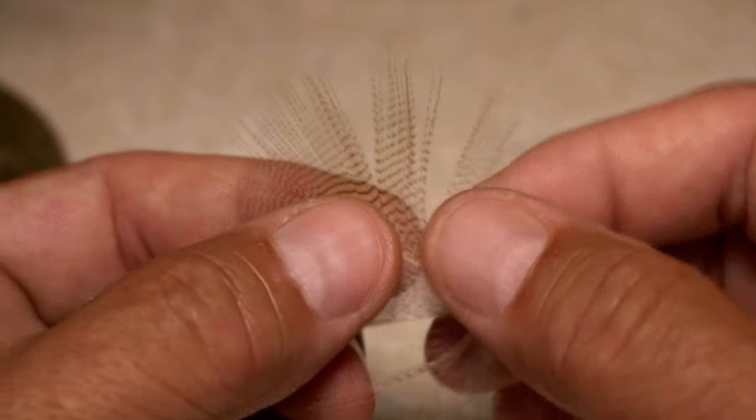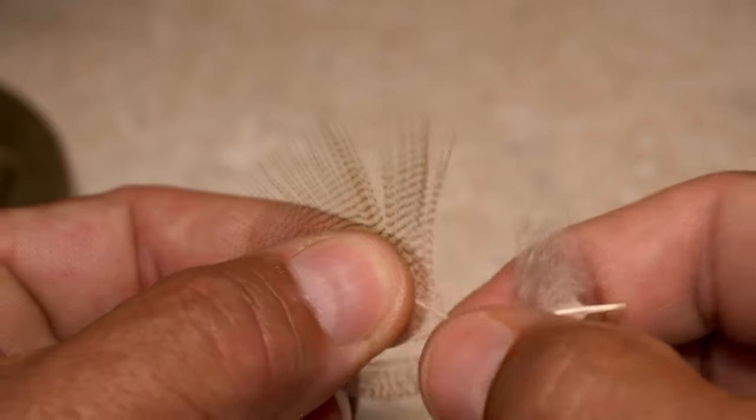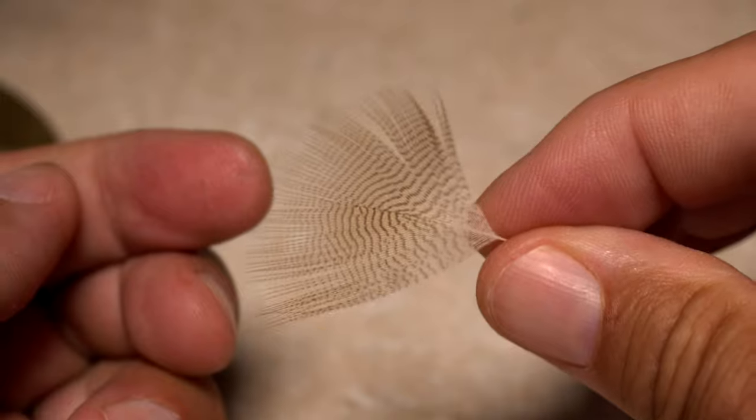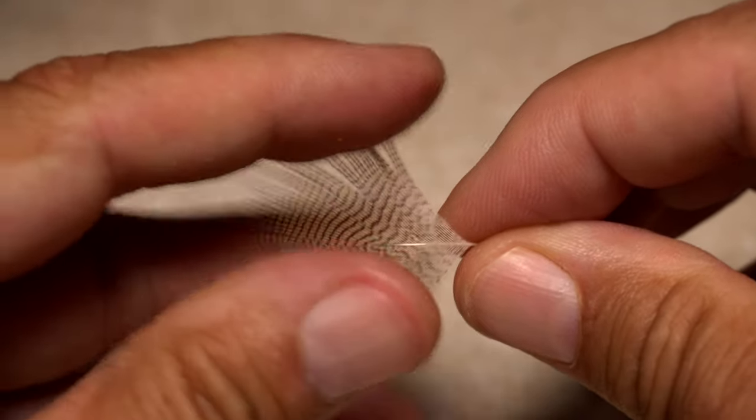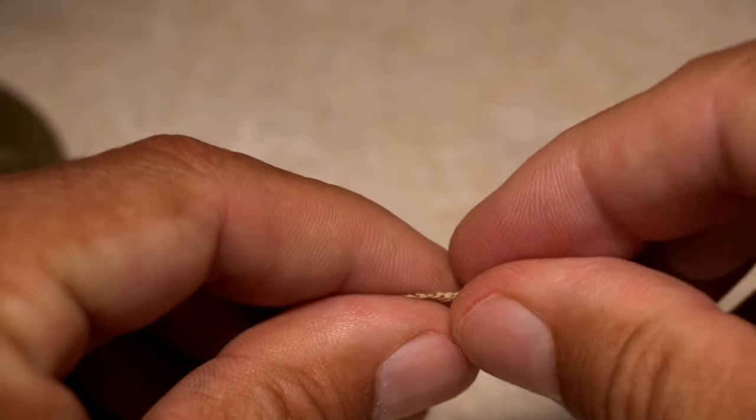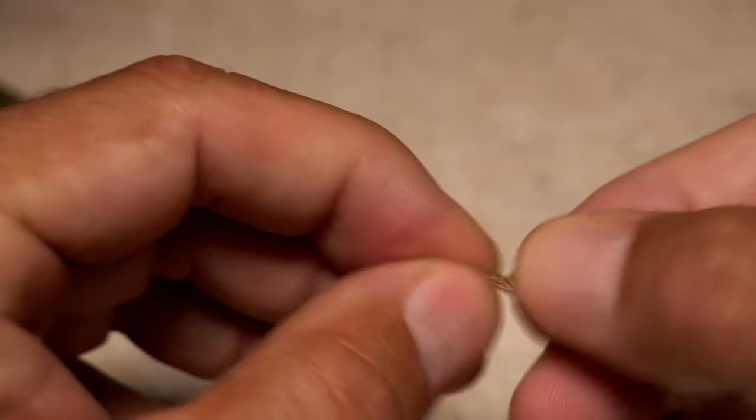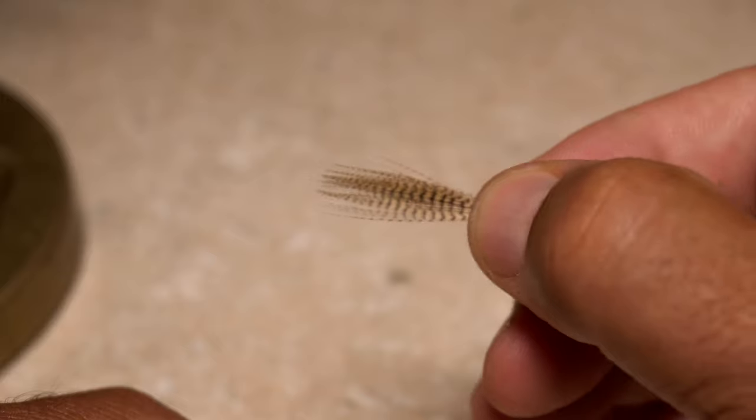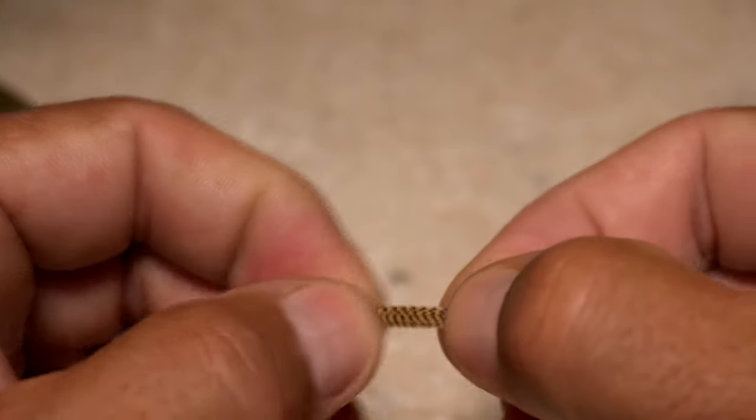A single wood duck flank feather is used to create the wing or back of the fly. Strip the lower fuzzy fibers free from the stem and then do your best to fold the feather around the stem. Ideally, all the tips should still be aligned. If the clump curves one way or the other, orient it so the concave side faces down.